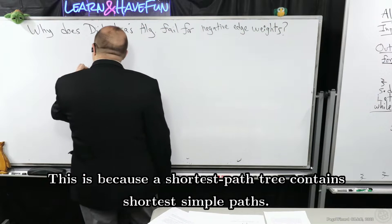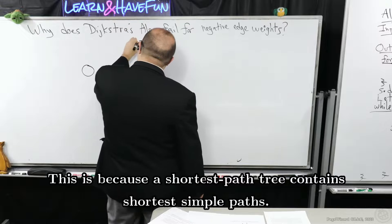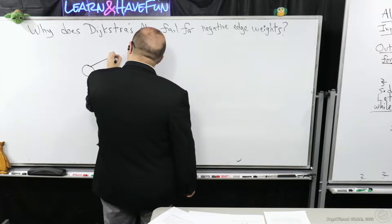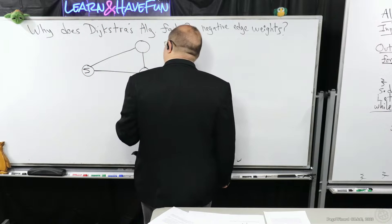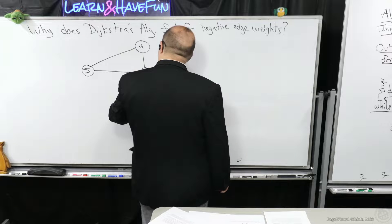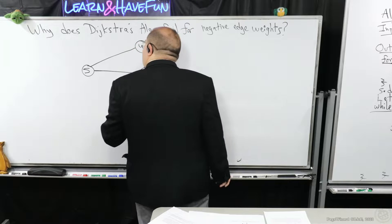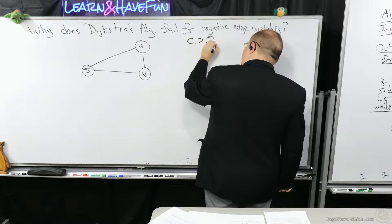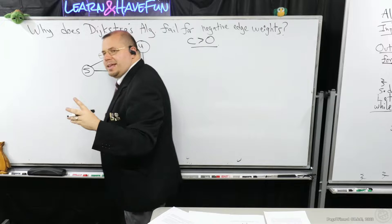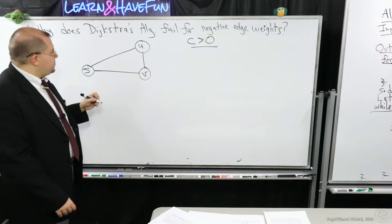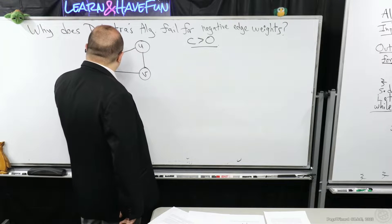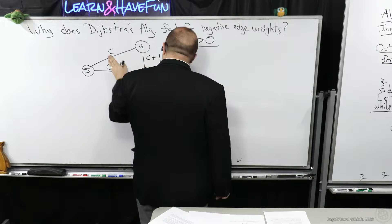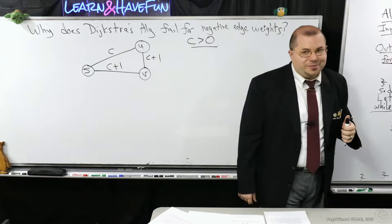Well, I'm going to consider a basic counterexample. This is a very simple counterexample. We're going to have the source S here, a vertex U and a vertex V. What we're going to do is make a constant C greater than 0, and assign the edge weights like this. Before I get too crazy with this, I'm going to assign these C, C plus 1, and C plus 1. So I'm just going to keep all of them right now positive because C is greater than 0.